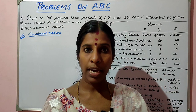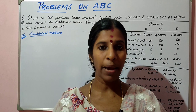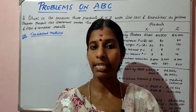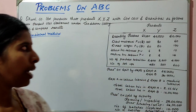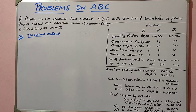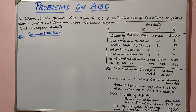Good morning everyone. Today we are going to start with the problems of activity based costing. I've written a question on the board — have a look at it and we'll start. It is given that ALL will produce three products, and the standard quantities as well as cost is given. You are asked to prepare the cost statement using the traditional costing method as well as the ABC costing method, and to compare the results of both methods.